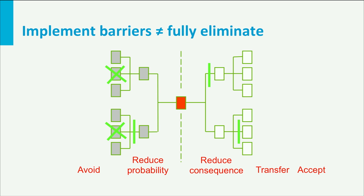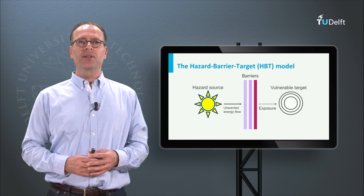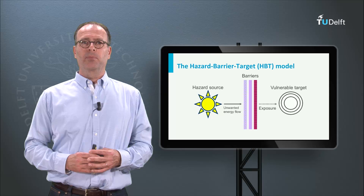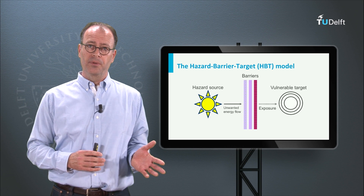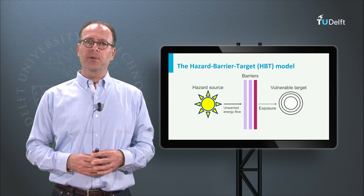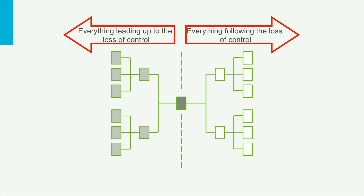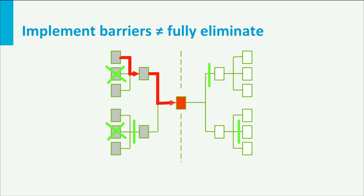Before I finish this lecture I want to add another nice and simple model to help our thinking about risk measures. This model is called the hazard-barrier-target model, and it describes the situation we often find ourselves in. There is some hazard that is a possible threat to some target, but which is protected by one or more barriers. Barriers can be all kinds of things — they can be physical, procedural or a combination of both. The barriers prevent the unwanted energy flow from reaching the target. Barriers can be shown in a bowtie, blocking pathways or scenarios. Unfortunately there will always be pathways that remain open — they are exposed when an accident happens or when a terrorist attack succeeds. So risk analysis never stops; it is a continuous process.